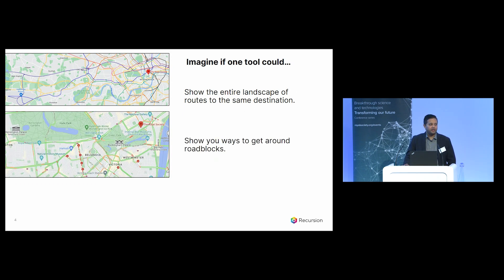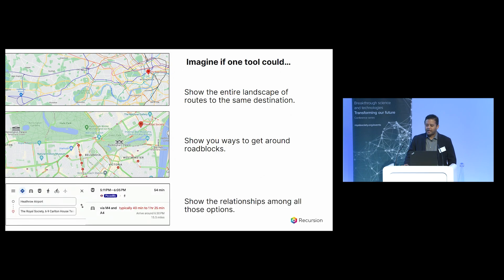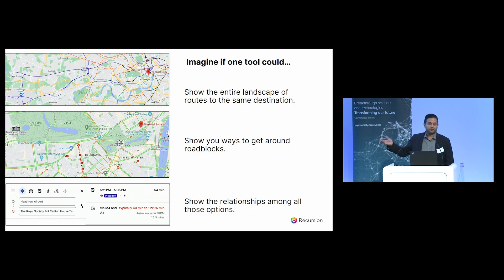Imagine if that same tool could also show you ways to get around roadblocks, so that once you got into central London and you see a road is closed, you can just go around it and still reach the same destination. And finally, imagine you also had a tool that could show you the relationships among all these options, so you could make an intelligent choice between taking the tube or taking the car depending on traffic and cost. Of course, what I've shown here is just screenshots from Google Maps — but imagine if we had similar tools to do that in biology.